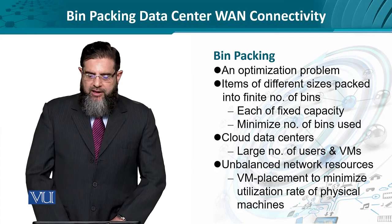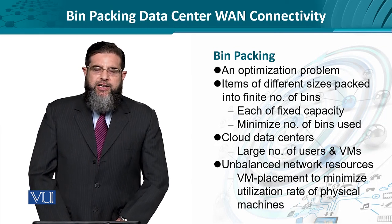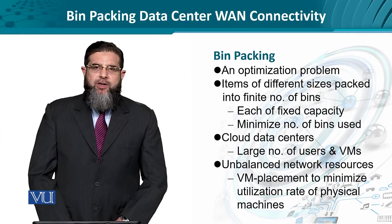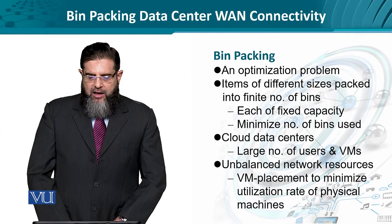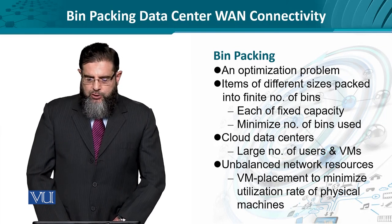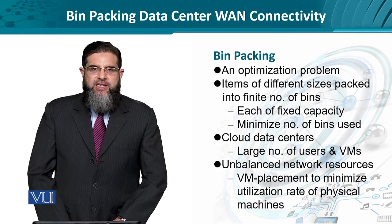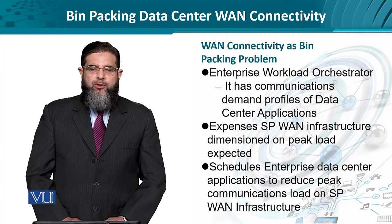In cloud computing data centers, we have a very large number of users. Each user needs a virtual machine. The question is how many of these virtual machines, for a certain number of users, could be accommodated at a certain data center, where we have distributed data centers all part of a single cloud. This results in an unbalanced network resource requirement, so virtual machine placement is done on certain data centers to reduce the utilization of physical machines. We'll see how we can go into the details through an example.